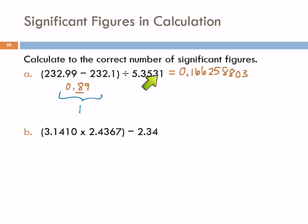When I take this number and divide by 5.3531, I'm thinking about this division operation. For dividing, I look at the fewest number of significant figures. How many significant figures does 5.3531 have? Five. So which is smaller — 1 or 5? One. That tells me I need to round my answer to one significant figure. What's that going to round to? 0.2. I look at the first digit I'm dropping, it's 6, so I round up. The answer is 0.2.